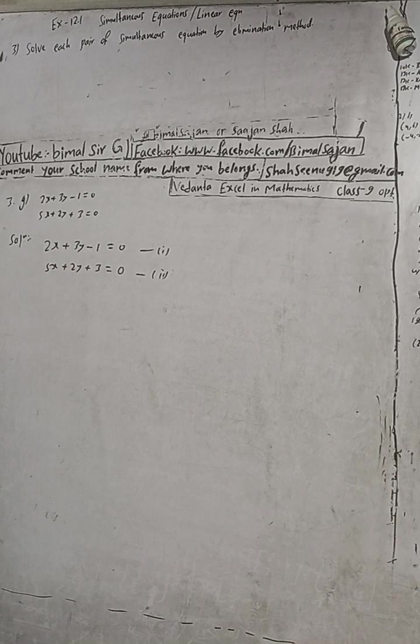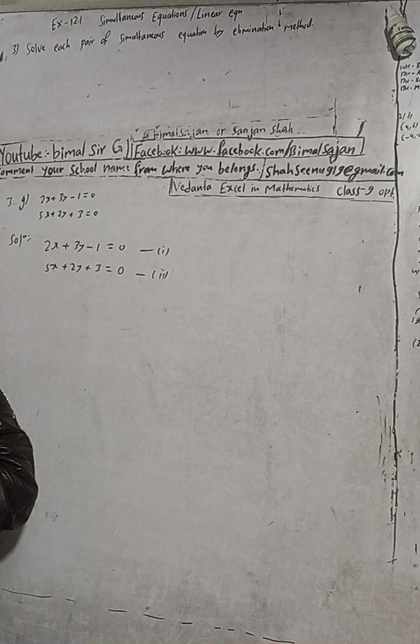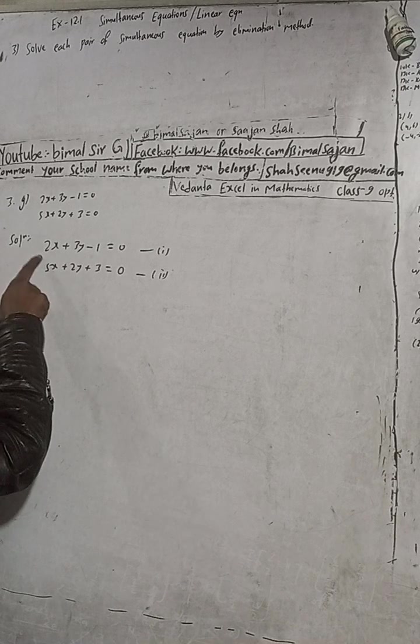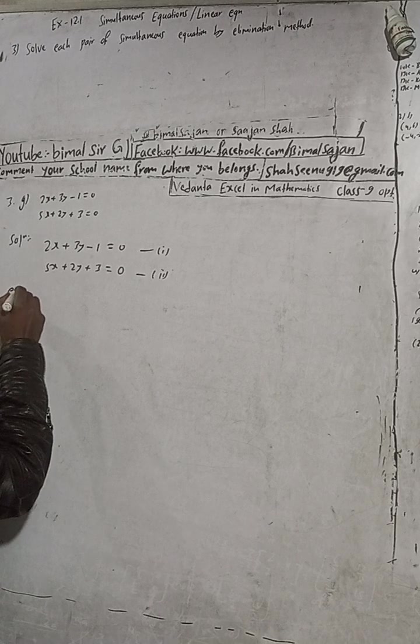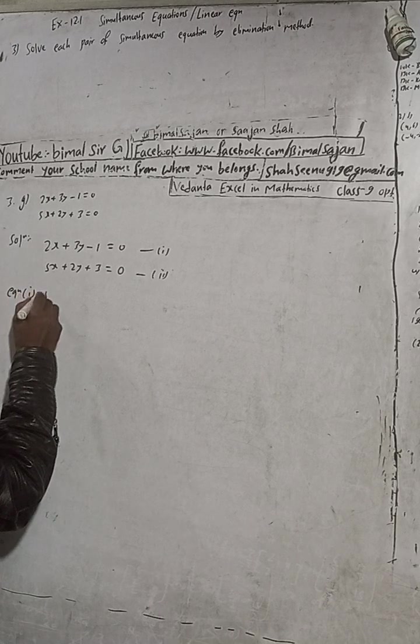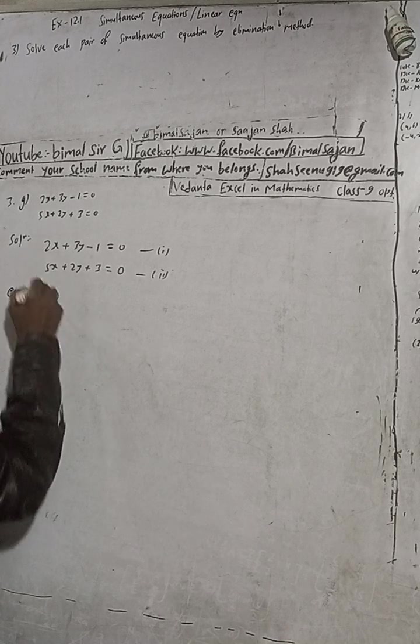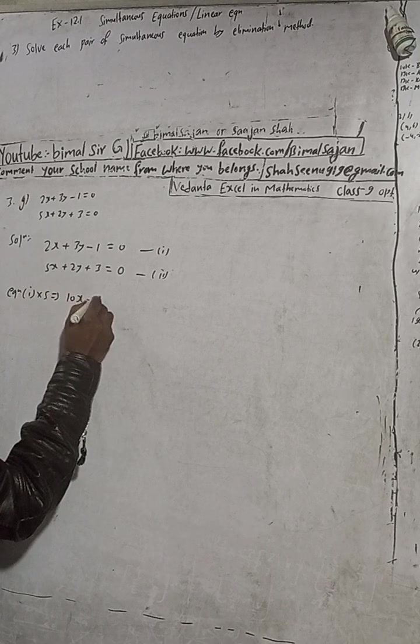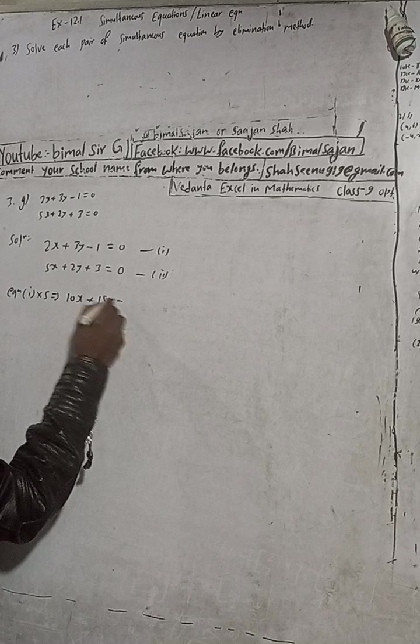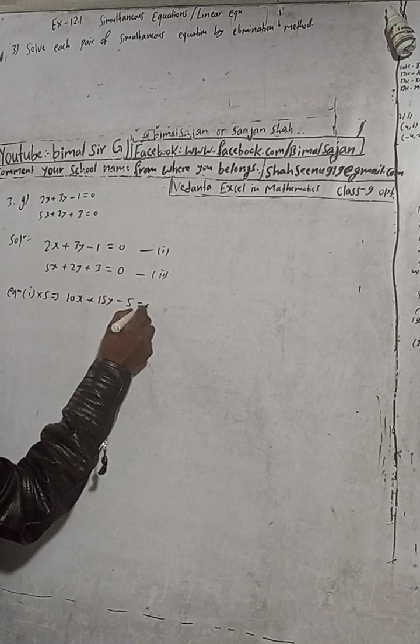So when to make the same coefficient, what I will do here is I will multiply this equation by five. So equation one into five, the multiple is five. So five times 10x plus three times five is 15y minus five is equal to zero.